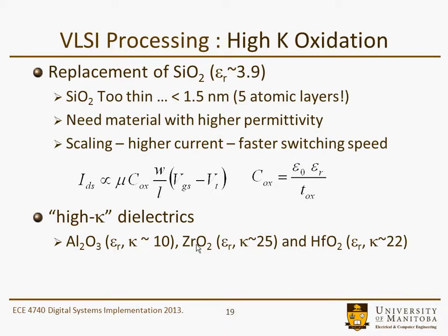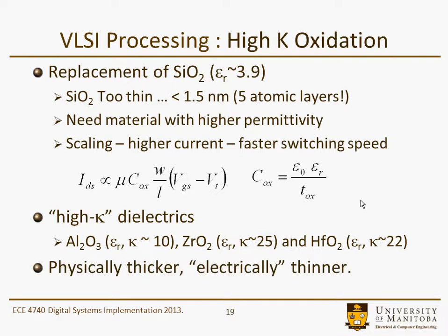Some high-K dielectrics that can be used are aluminum oxide, zirconium dioxide, and hafnium oxide — all probably very difficult to deal with, but we'll look at pictures later on how they're manufactured. They are physically thicker but electrically thinner, so the devices can actually be made physically thicker and still have the same electrical characteristics as a thinner SiO2 layer.